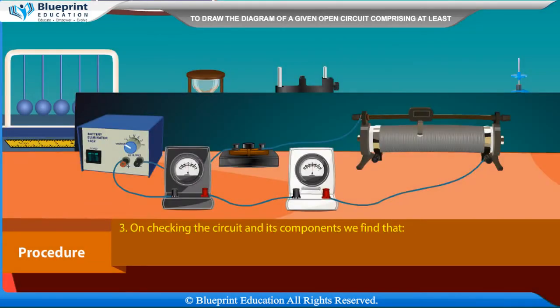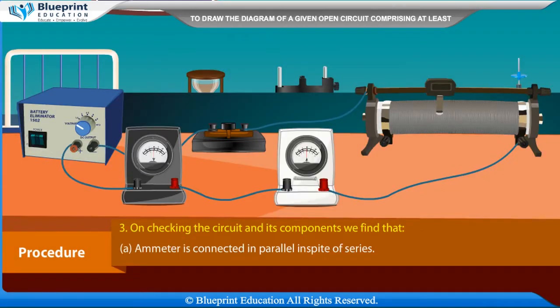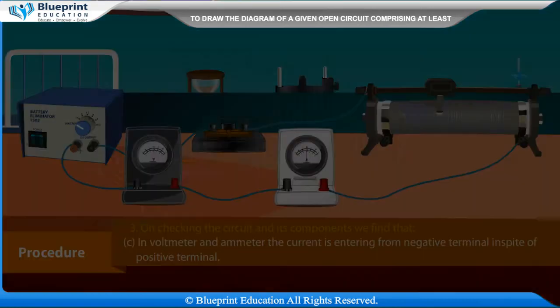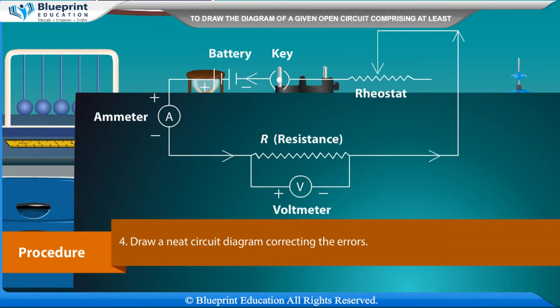On checking the circuit and its components, we find that the ammeter is connected in parallel instead of series, the voltmeter is connected in series instead of parallel, and in both the voltmeter and ammeter, the current is entering from the negative terminal instead of the positive terminal. Draw a neat circuit diagram correcting these errors.